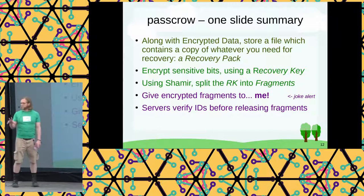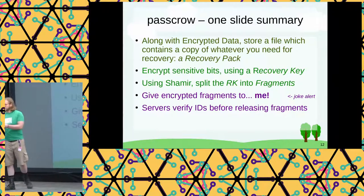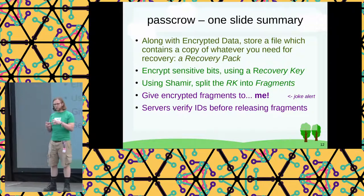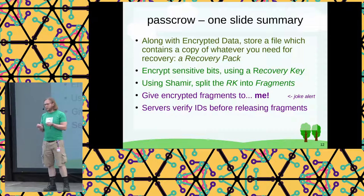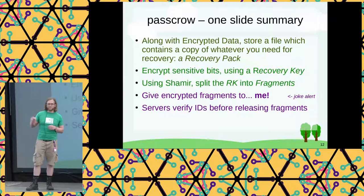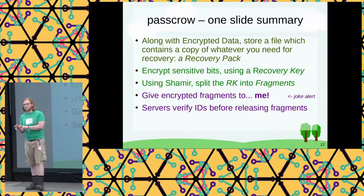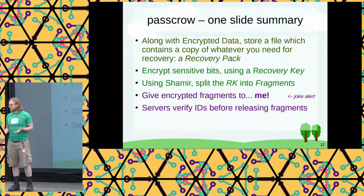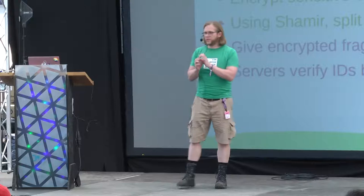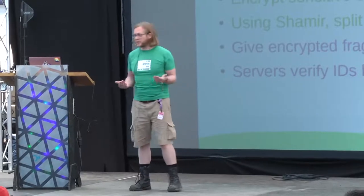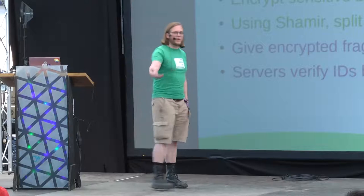Here's a really dense one-slide summary of how PassCrow works. Usually you have a key that unlocks your information. I want to take that key and encrypt it with another key — I generate a throwaway key that is only used to encrypt this really important secret. That is then stored in the same place as your encrypted data, so those things live together. Shared fate: if that device functions, you've lost both things — they protect the same thing. This recovery key is then split using Shamir into what I'm calling fragments.